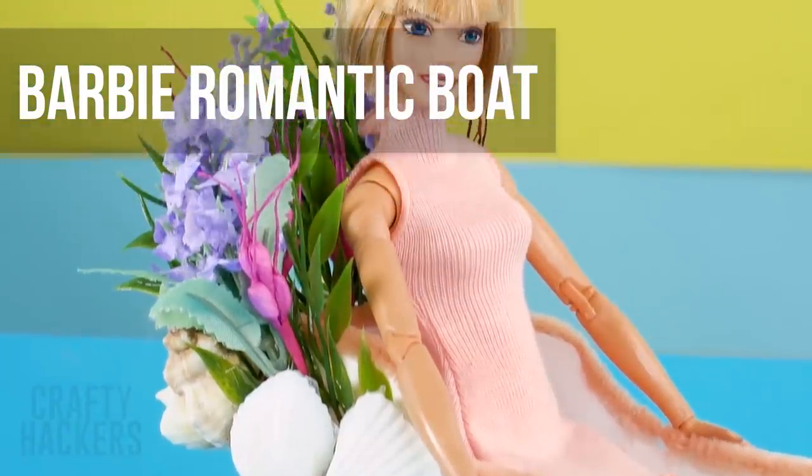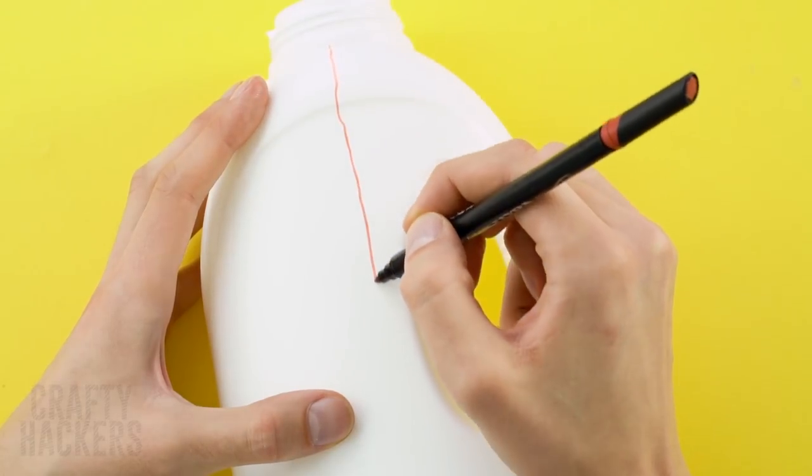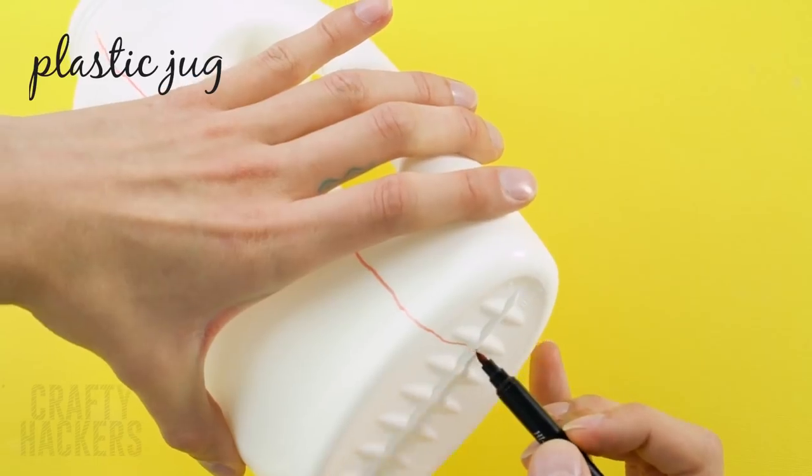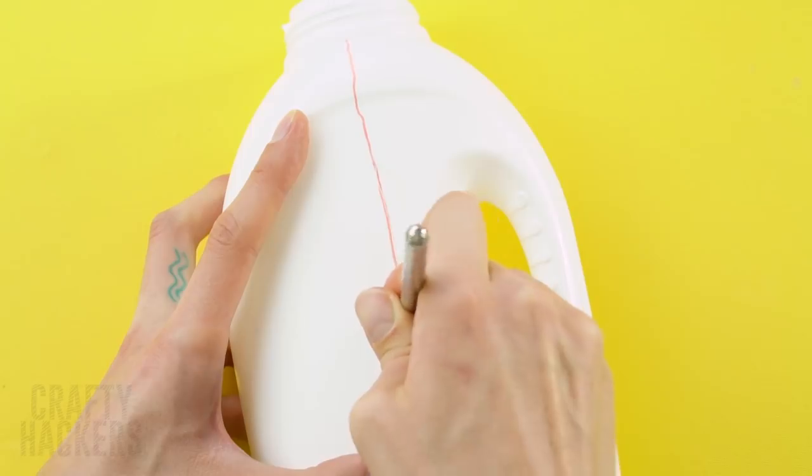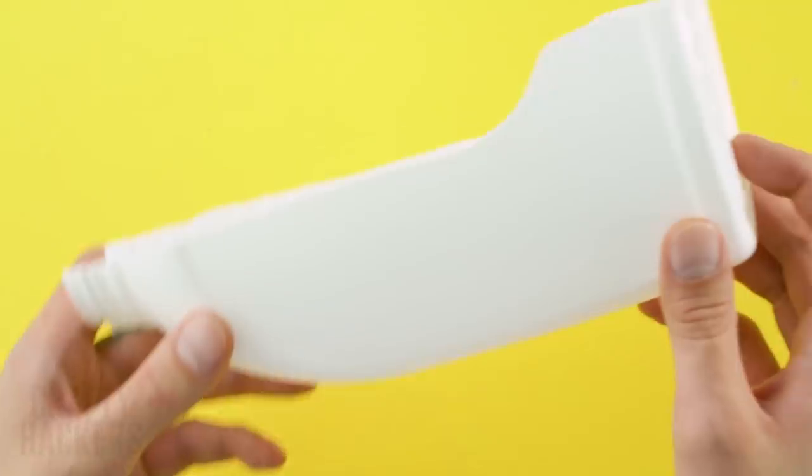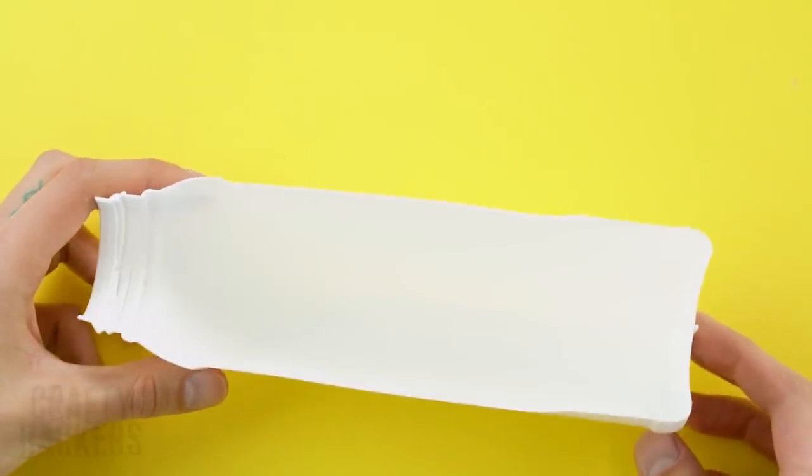Barbie Gondola. Barbie is ready for a romantic gondola ride along the Venice canals. But first, we need to cut up a used plastic jug in half. Mark the cutting line with a marker, then carefully cut along the line with an X-Acto knife.